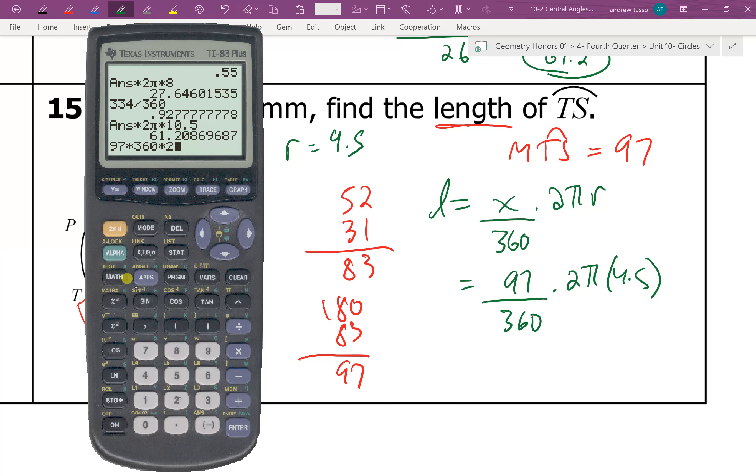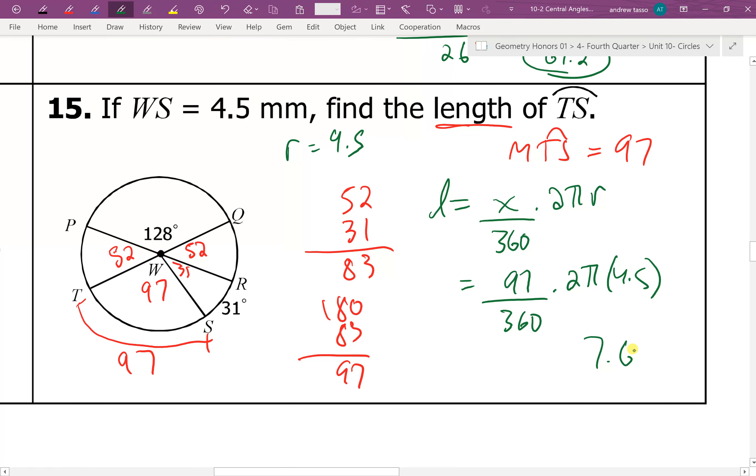Times 2 pi. I times by 360. So 97 divided by 360. And then we times by 2 pi. And we times by 4.5. So we're getting an answer of 7.618. So that's really 7.62 if we're rounding to the nearest hundredth.